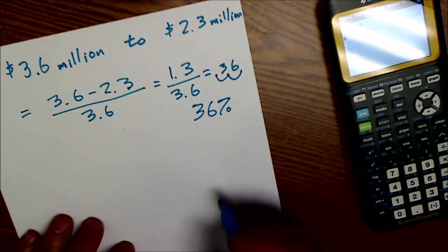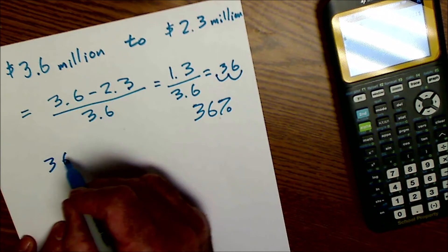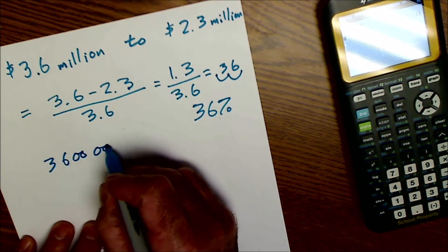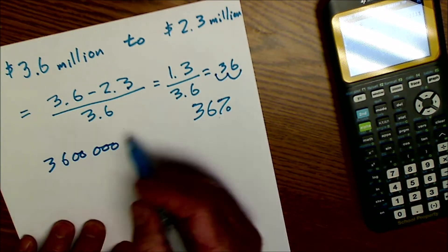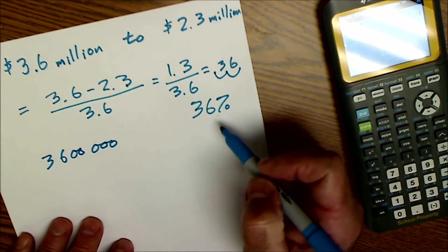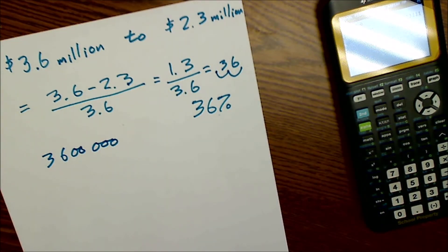If I actually wrote out all those digits, like $3.6 million minus $2.3 million, all those zeros would cancel, and it would give me the same 36%.